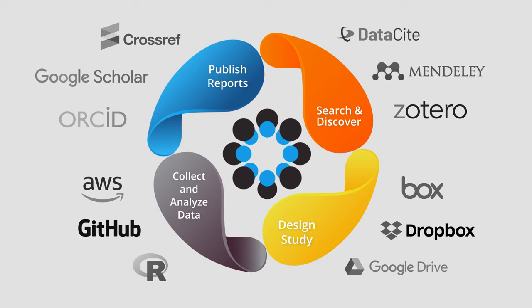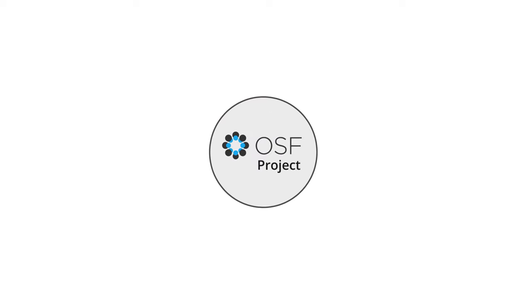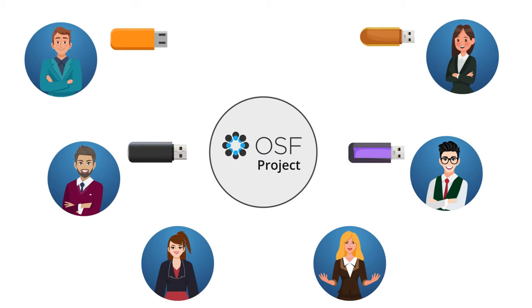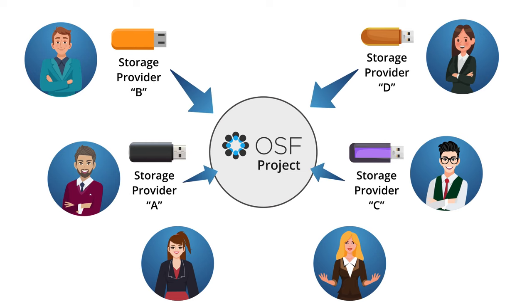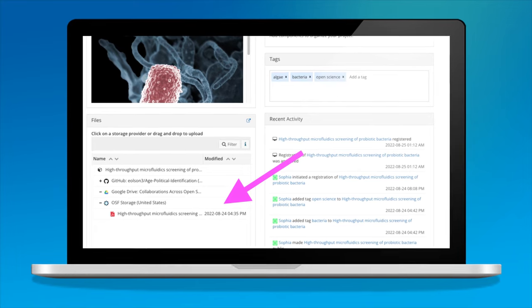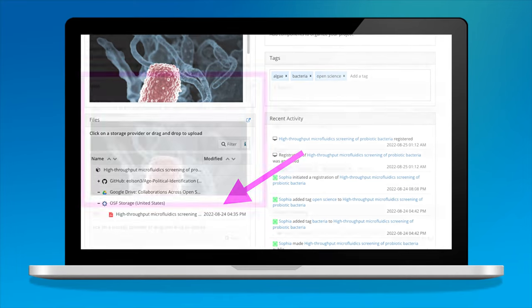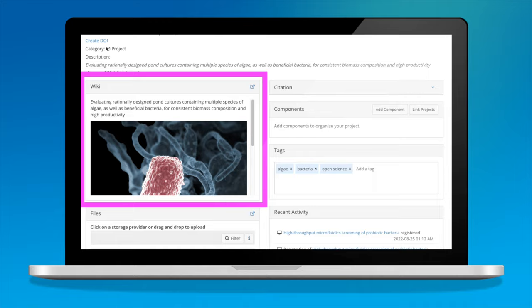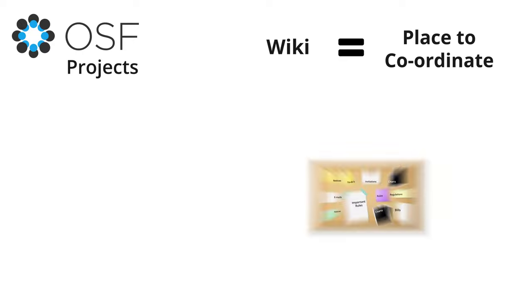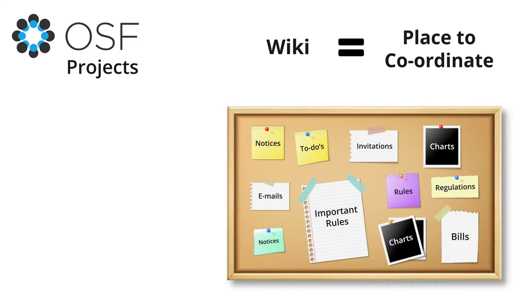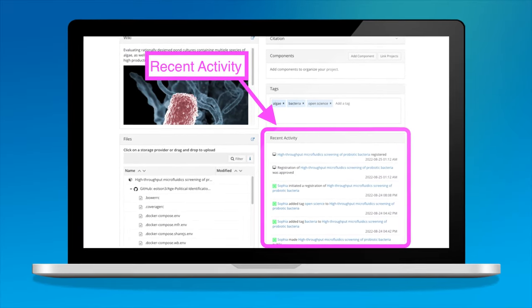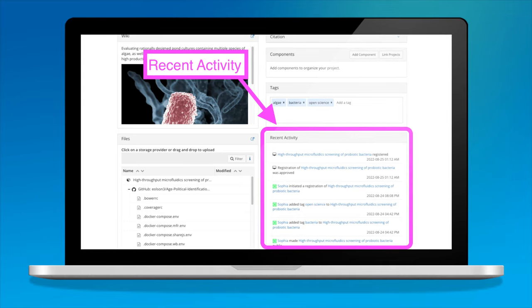Sophia is able to integrate her OSF project space with a variety of common external storage providers for uploading data, code, images, or even videos. This means that all the files from Sophia and her team on their preferred storage providers can be aggregated together on her OSF project without having to re-upload each file, and each of these files from external storage providers can still render on her OSF project. Sophia uses the wiki section on her project as a bulletin board, coordinating with her team members and leaving messages about objectives and plans to make sure everyone is on the same page. All of Sophia and her team's activities on the project are included in an activity log, tracking the various changes to files and organization. Any changes to her project space do not affect her initial pre-registration.